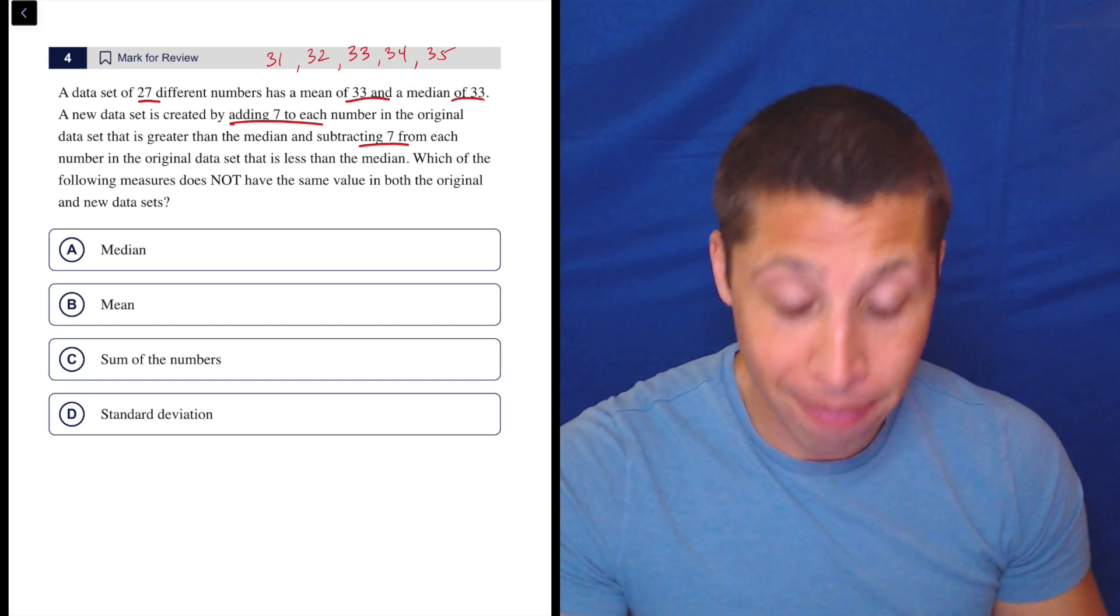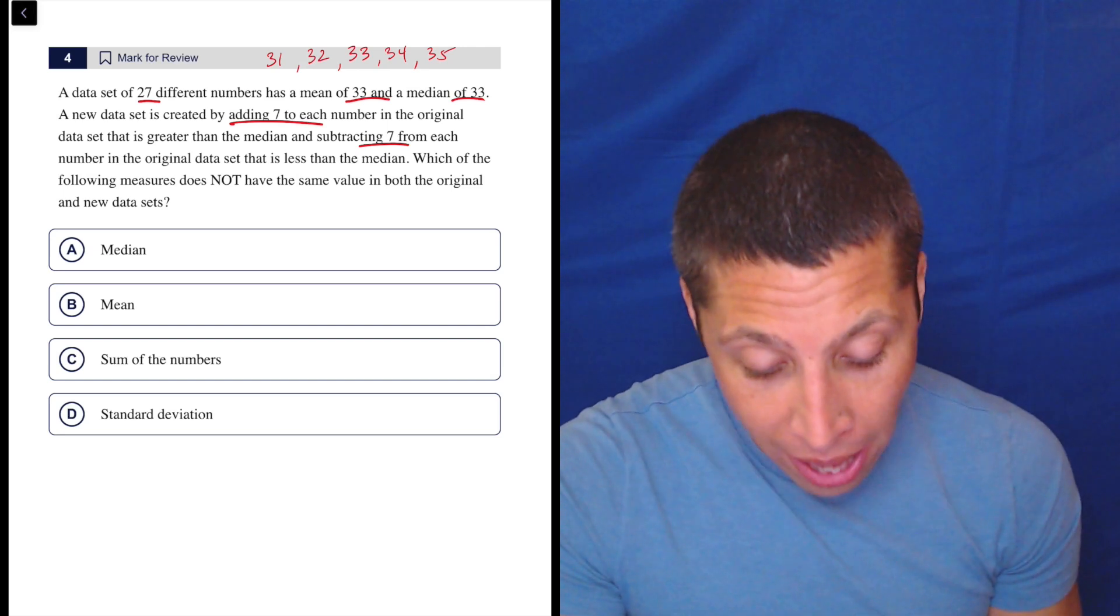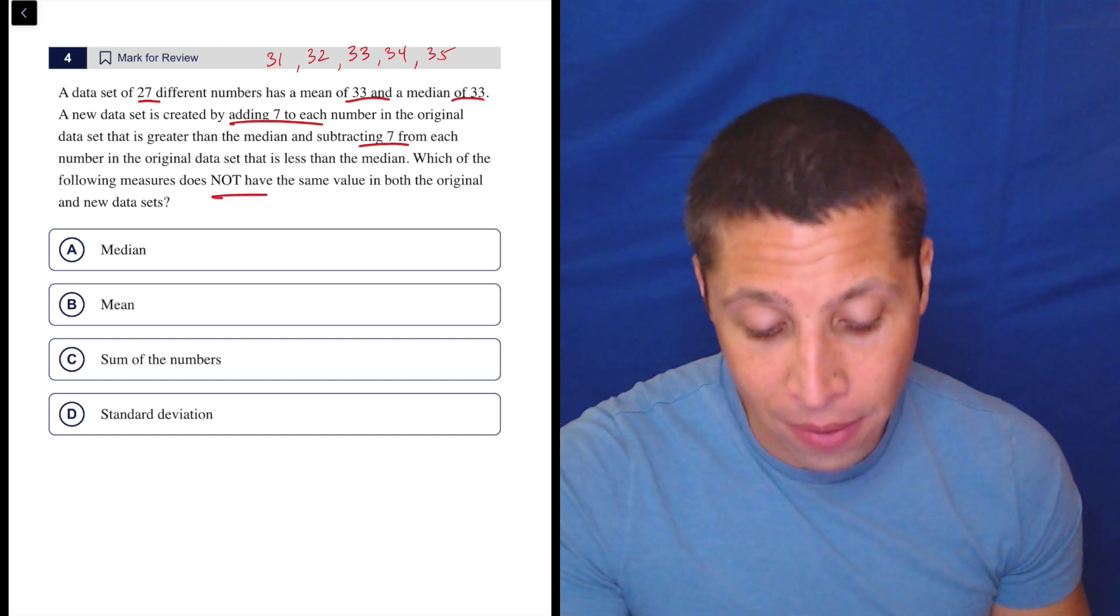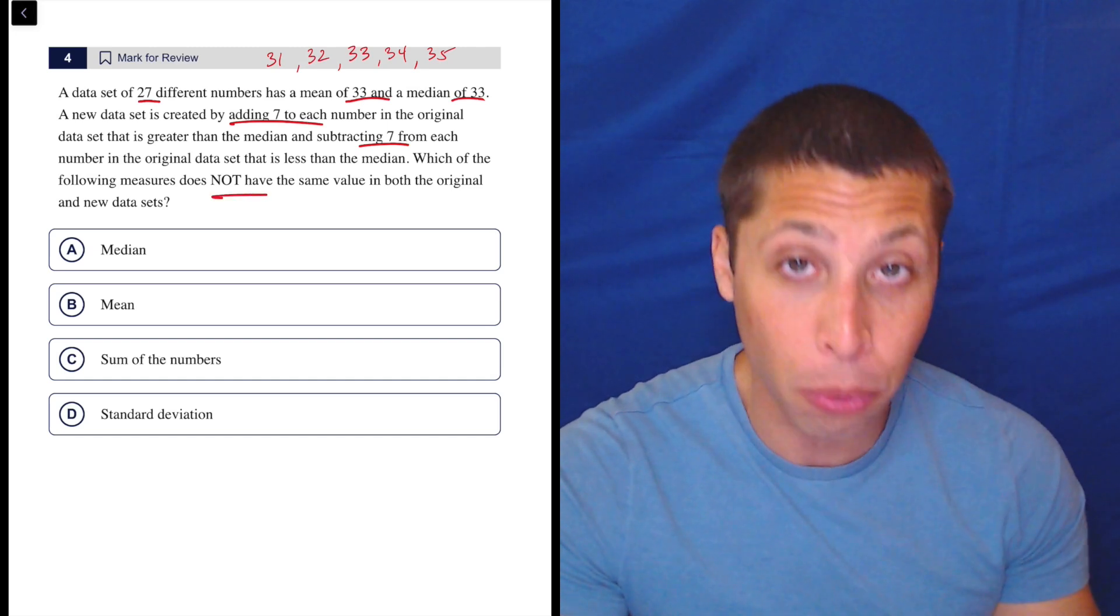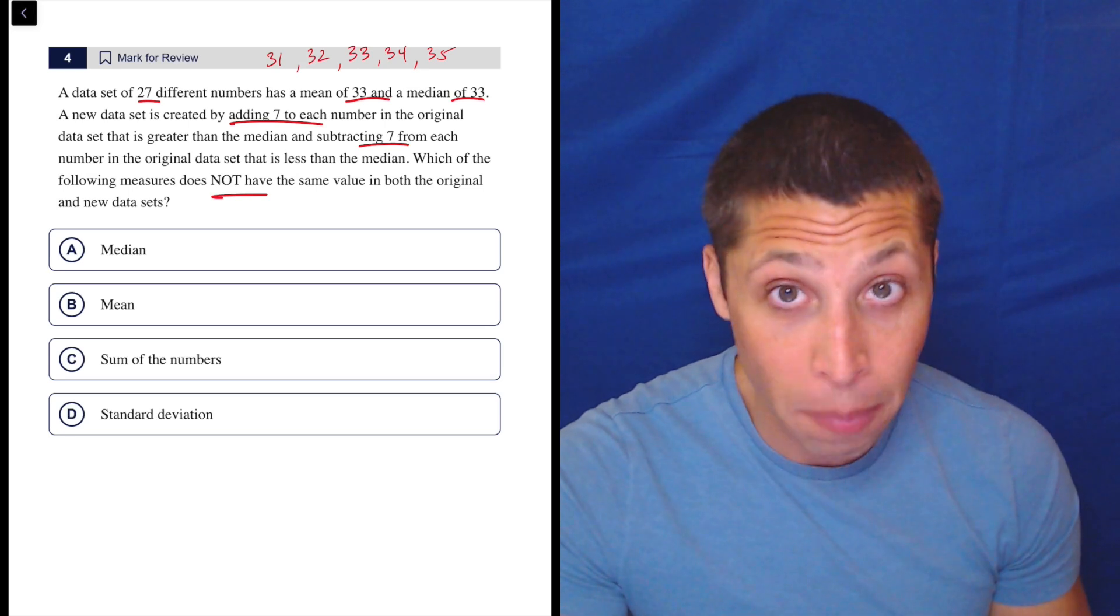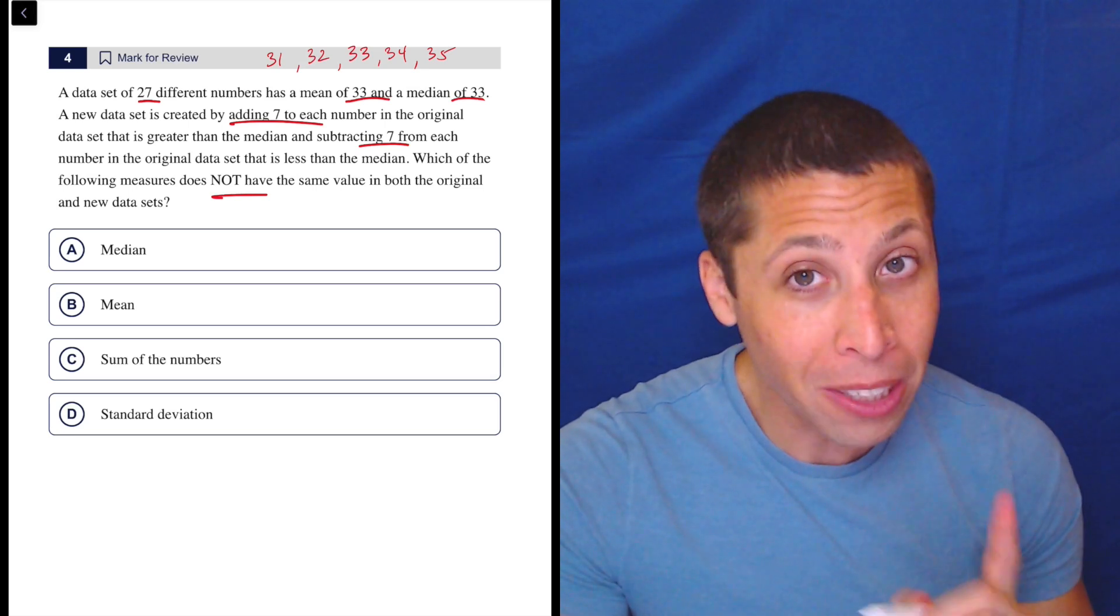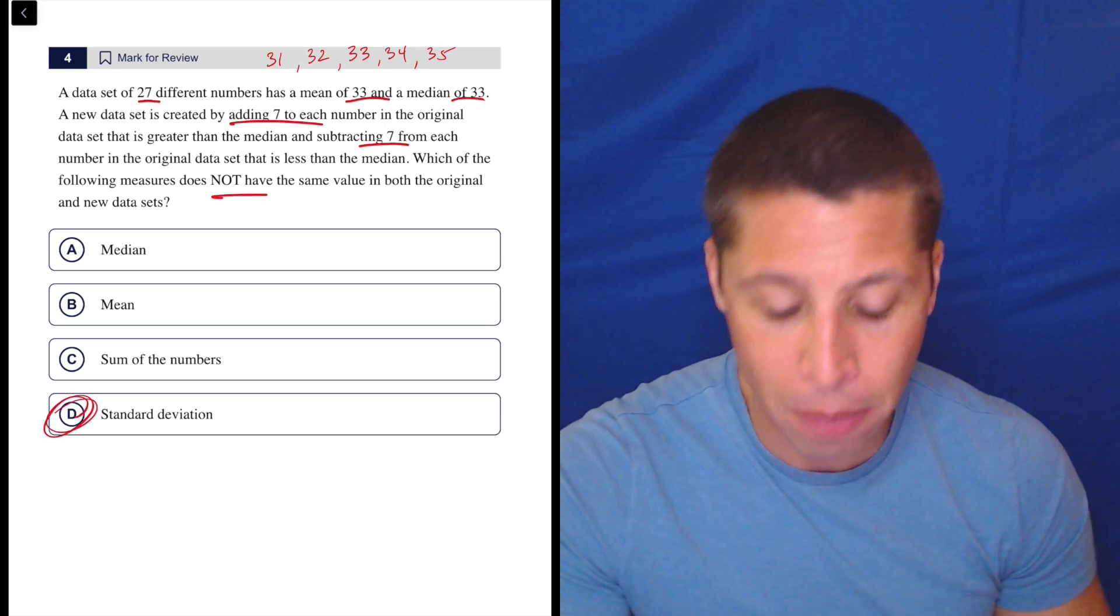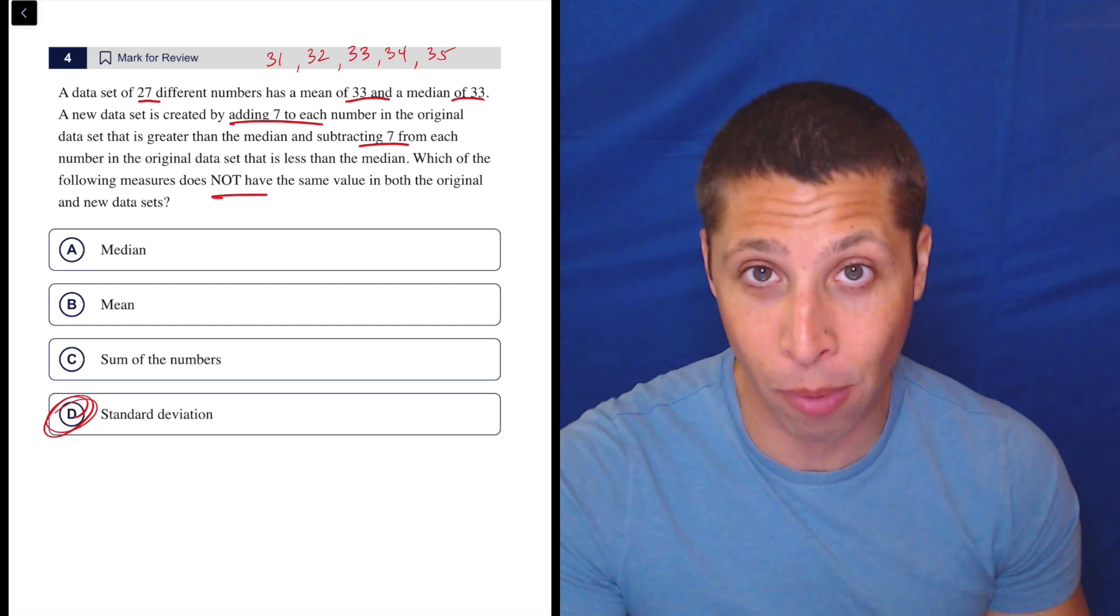So we could do that and then we could prove which of the following measures does not have the same value in both the original and new data sets. We could prove that the median is the same. We could prove that the mean is the same. We could prove the sum of the numbers is the same. We wouldn't really be able to prove the standard deviation is different but we could see just from process of elimination that it has to be, right?